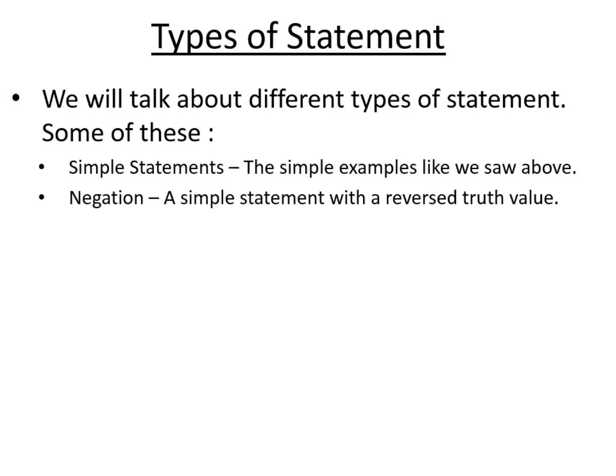So in the example above, we saw tomorrow is Tuesday and that can be true or false. Let's assume that it is false, which will be the case six days out of seven for anyone listening to this. So if tomorrow is Tuesday is a false statement, then if we say tomorrow is not Tuesday, then that would be true. So negations are reversed truth values of simple statements.